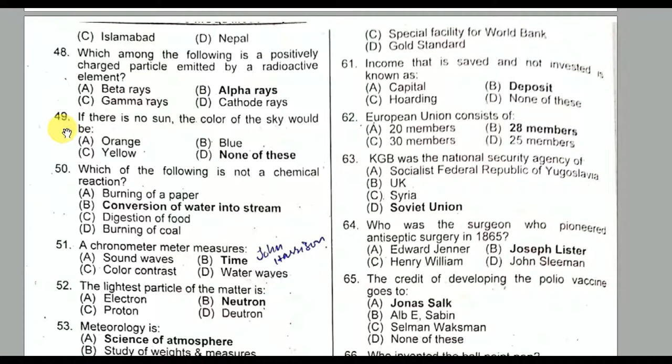Question number forty-nine: If there is no sun, what color would the sky be? The answer is none of these options — basically, the sky would be black when there is no sun.